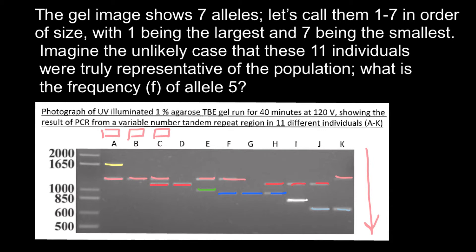So now we have eleven persons, and these eleven persons have alleles of different sizes. It is very easy to make a mistake if you just find the quantity of allele number five — which is here, and which is three — and divide this number by the total number of alleles by simply counting them.